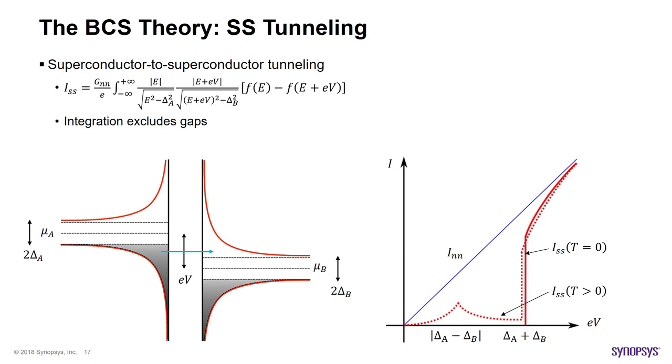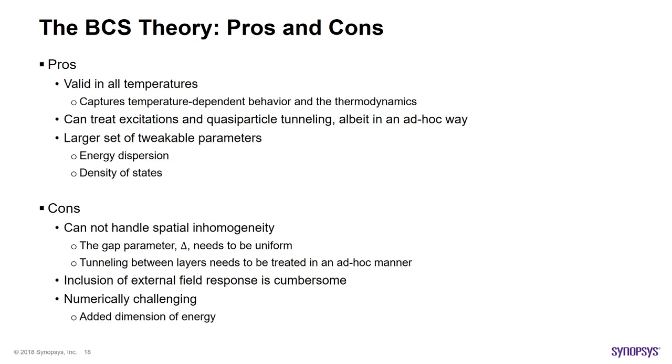As another example, we can also analyze tunneling between two superconductors. Here, the zero temperature current only starts flowing when a voltage bias larger than the sum of energy gaps of both superconductors are applied. The discontinuity in the zero temperature current at the onset of current flow is a direct manifestation of the singularity in the density of states. Similar to the normal metal superconductor case, we see the secondary effect in dotted line due to the excited particle contribution at finite temperatures.